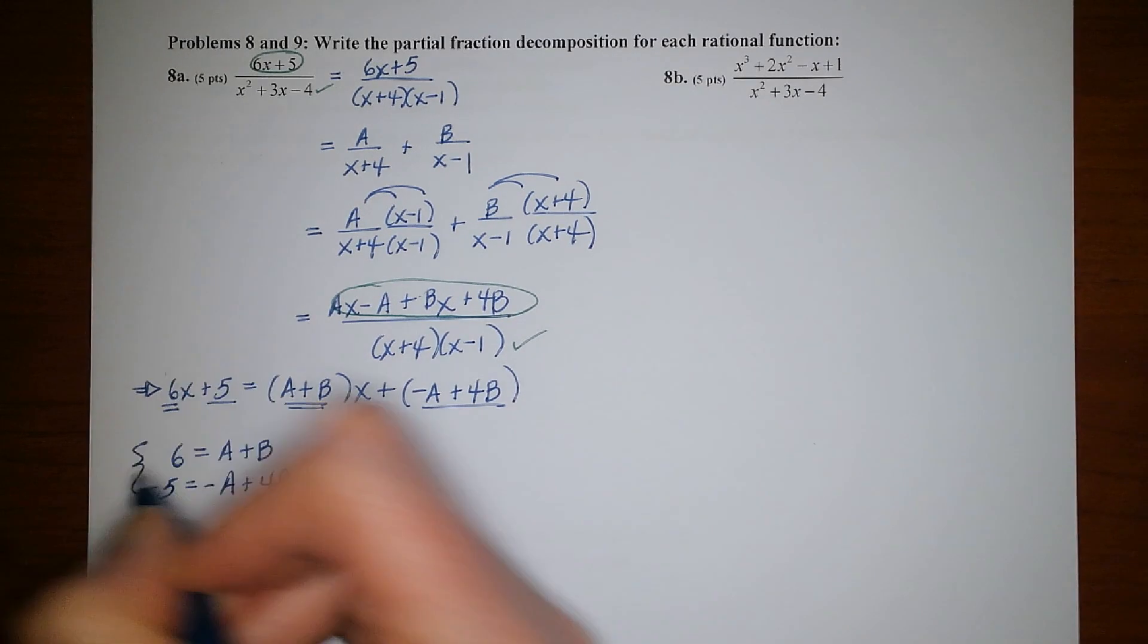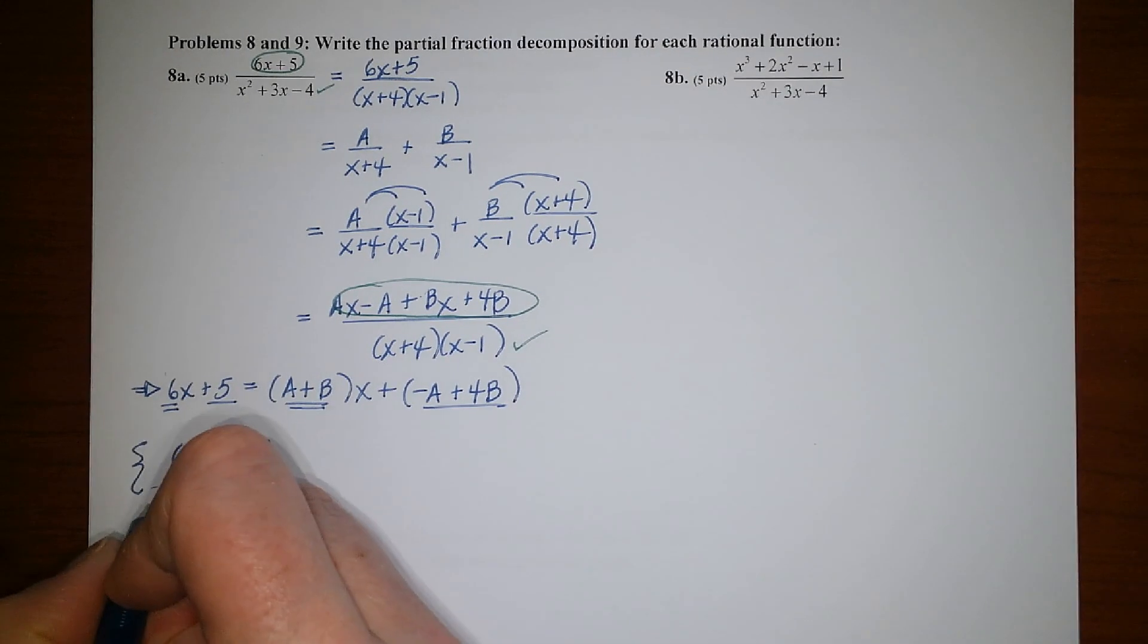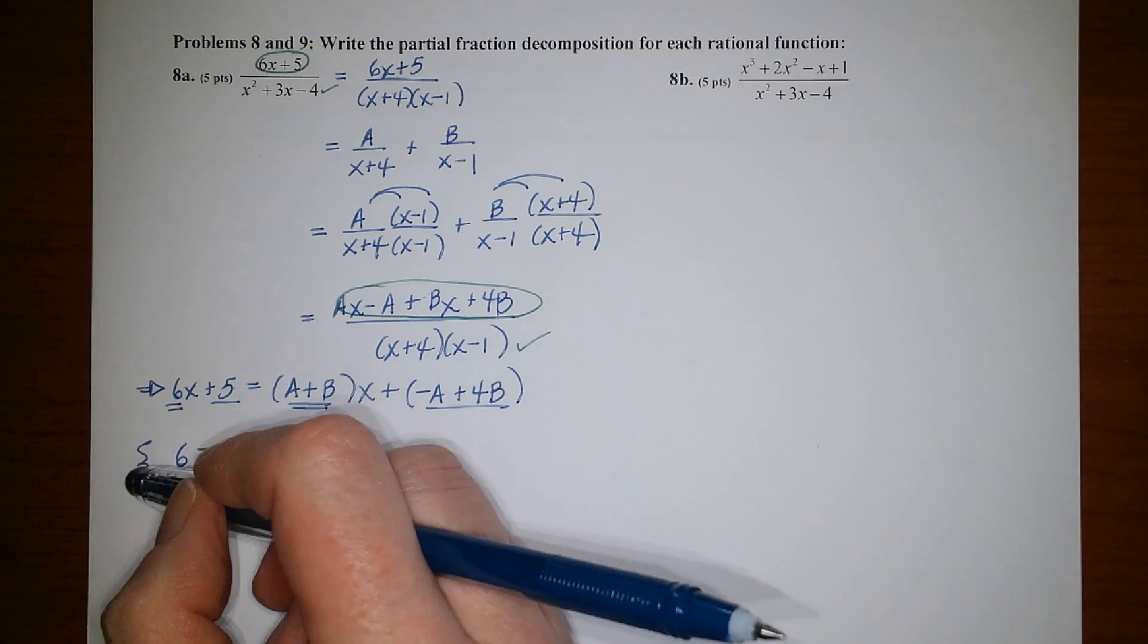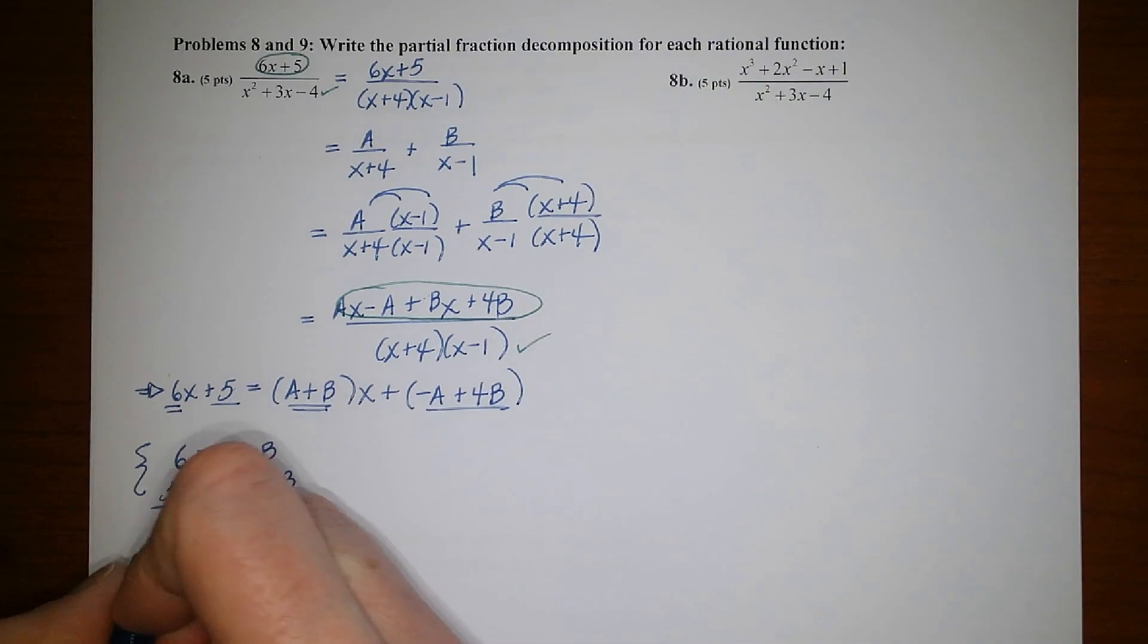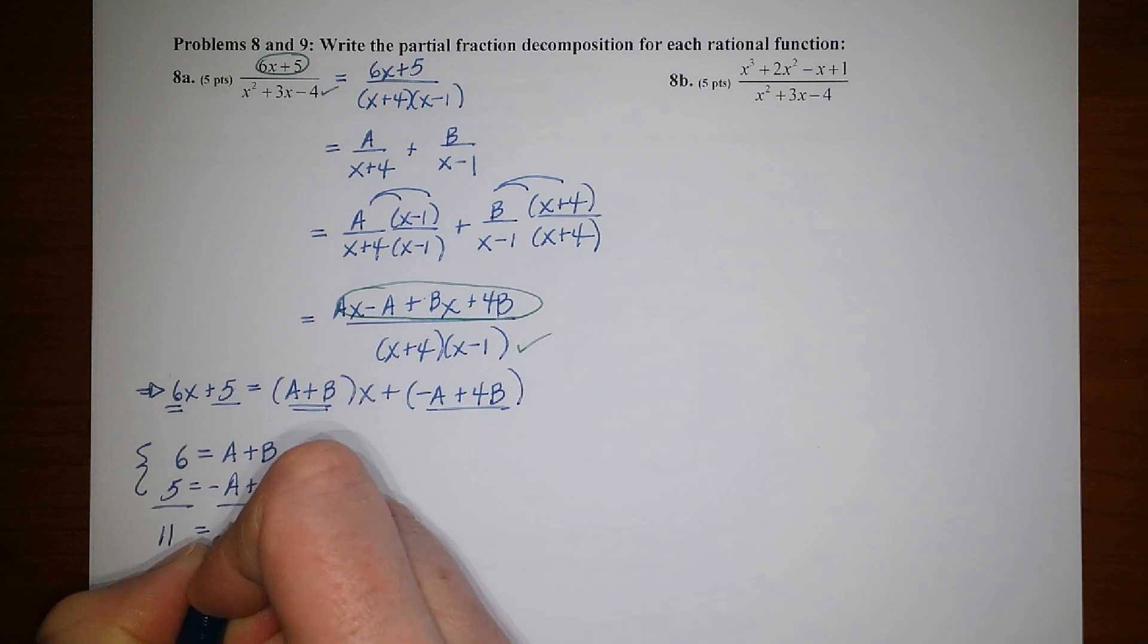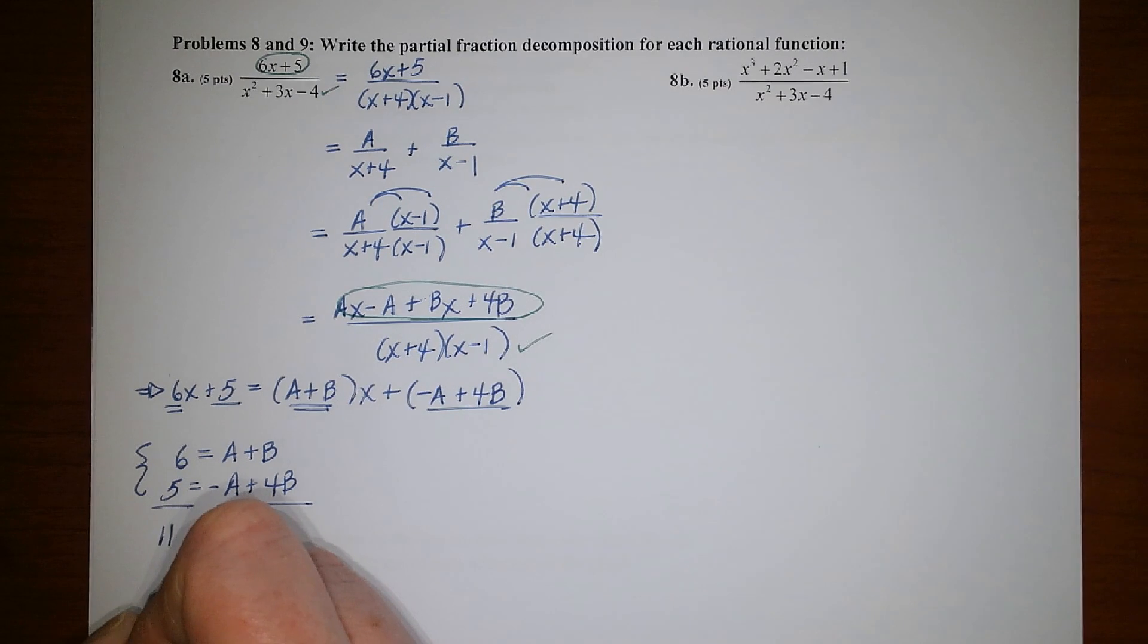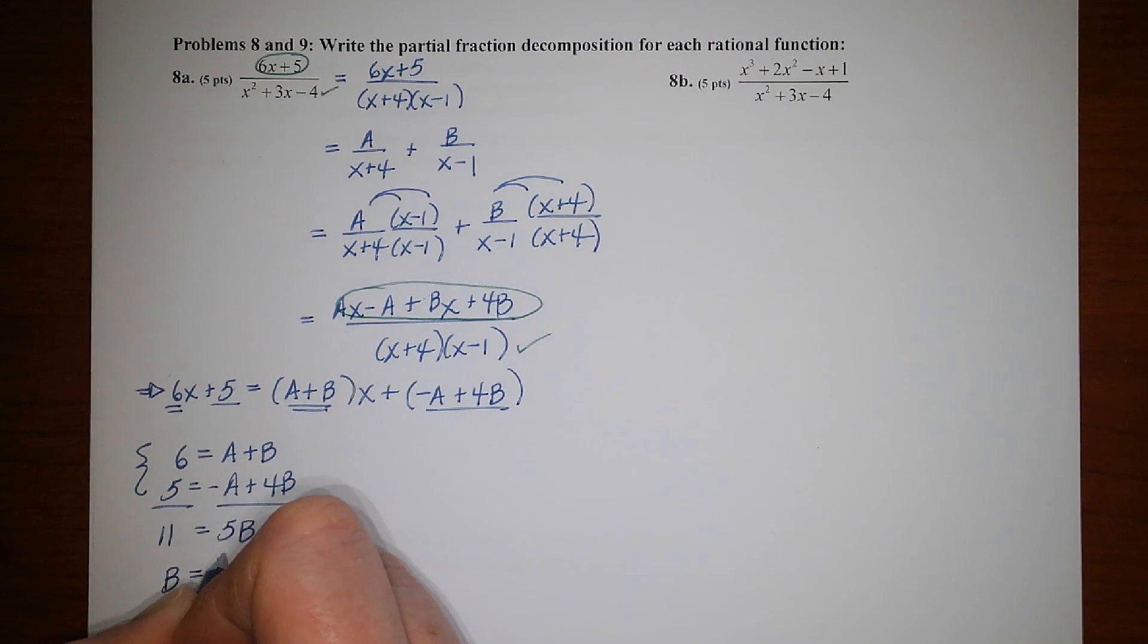And so to solve this system of equations, I personally would just add the rows together since the A's are already opposites. And I'd end up with 5B equals 11. And then divide both sides by 5, and you end up with 11 fifths.